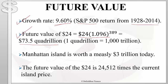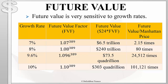That twenty-four dollars would have grown over the three hundred and eighty-nine years to seventy-three point five quadrillion dollars. One quadrillion is equal to one thousand trillion, so that twenty-four dollars would have grown to seventy-three thousand five hundred trillion dollars. By contrast, Manhattan is worth only three trillion dollars today. This tells us we could have grown that twenty-four dollars to about twenty-five thousand times the current price of Manhattan.